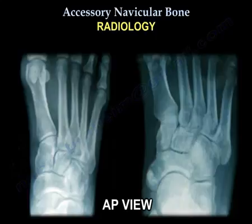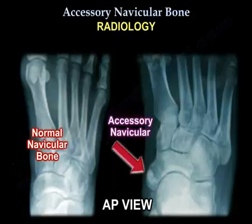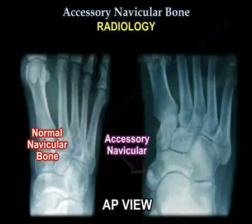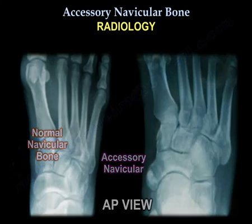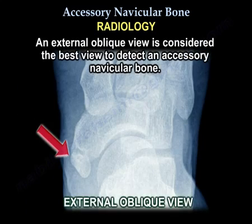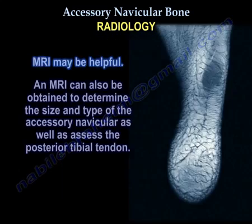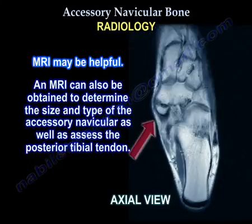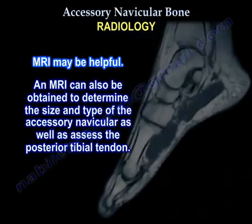Relative to a normal foot as seen on the left, a plain X-ray AP view can detect the accessory navicular as seen on the right. An external oblique view is considered the best view to detect an accessory navicular bone. An MRI can also be obtained to determine the size and type of the accessory navicular, as well as assess the posterior tibial tendon.